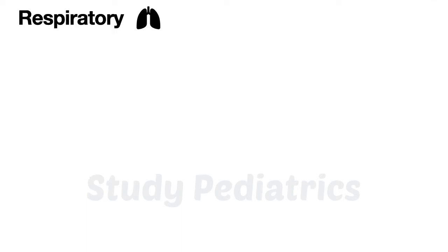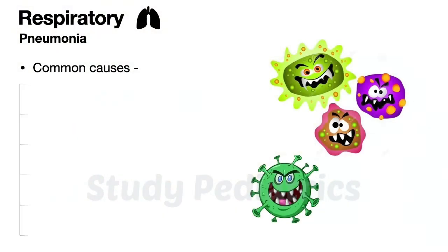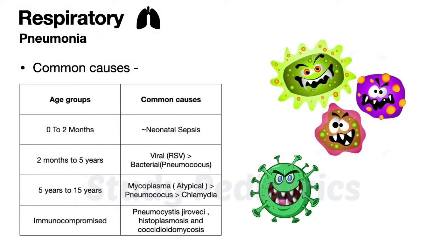The most important topic in respiratory is pneumonia. Let's study the common causes grouped by age. For 0 to 2 months, the most common cause is the same as neonatal sepsis — in India, Klebsiella, and worldwide Streptococcus agalactiae.